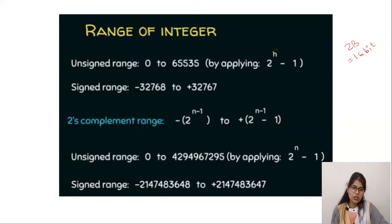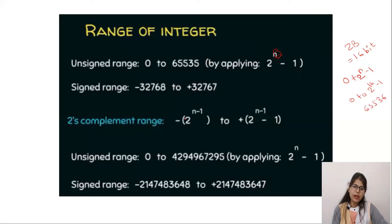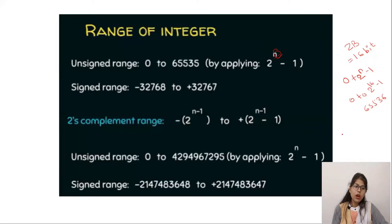Here N denotes the number of bits. For the unsigned range, the formula is 0 to 2^N − 1, that is 0 to 2^16 − 1. 2^16 is 65536, and when we subtract 1 we get 65535. For the signed range, we have both positive and negative values and the formula is −2^(N−1) to +2^(N−1) − 1.